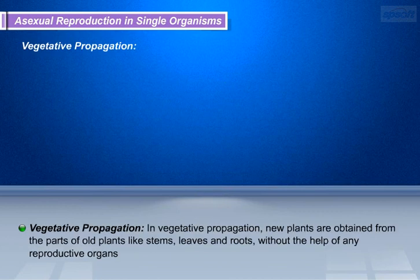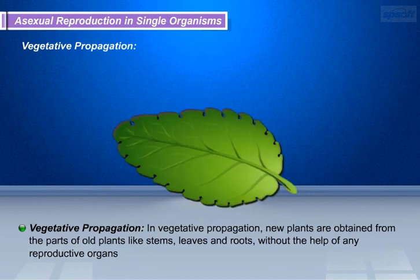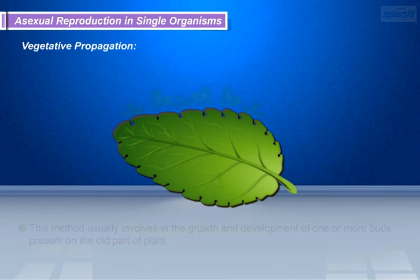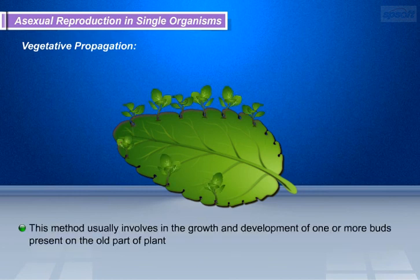Now we will discuss vegetative propagation. In vegetative propagation, new plants are obtained from the parts of old plants like stems, leaves, and roots, without the help of any reproductive organs. This method usually involves the growth and development of one or more buds present on the old part of the plant.